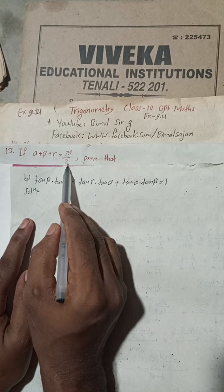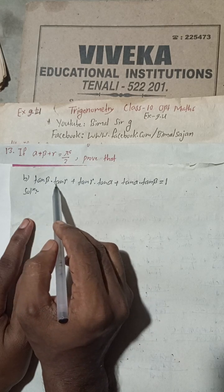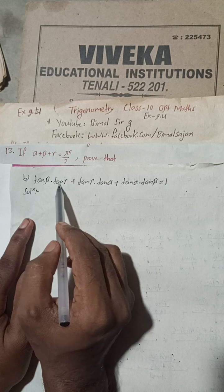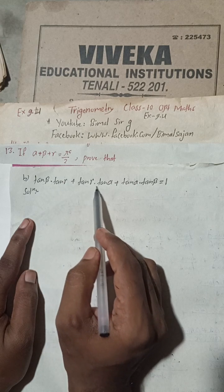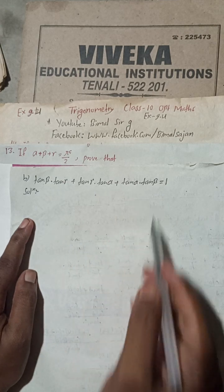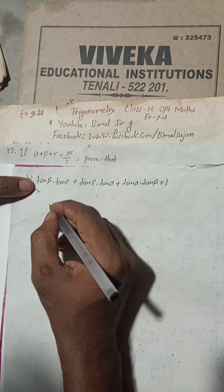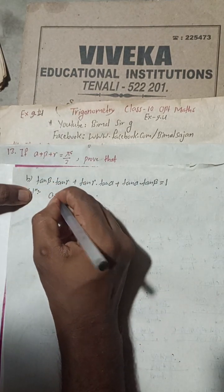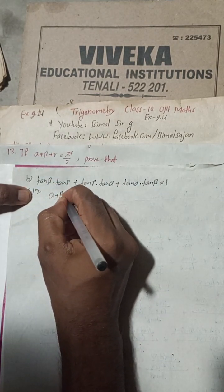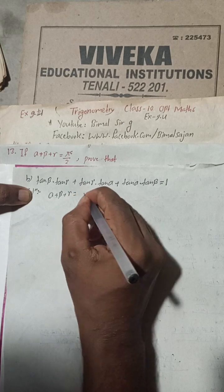So let's begin this solution. If alpha plus beta plus gamma is equal to pi by 2, prove that tan beta times tan gamma plus tan gamma times tan alpha plus tan alpha times tan beta is equal to 1.